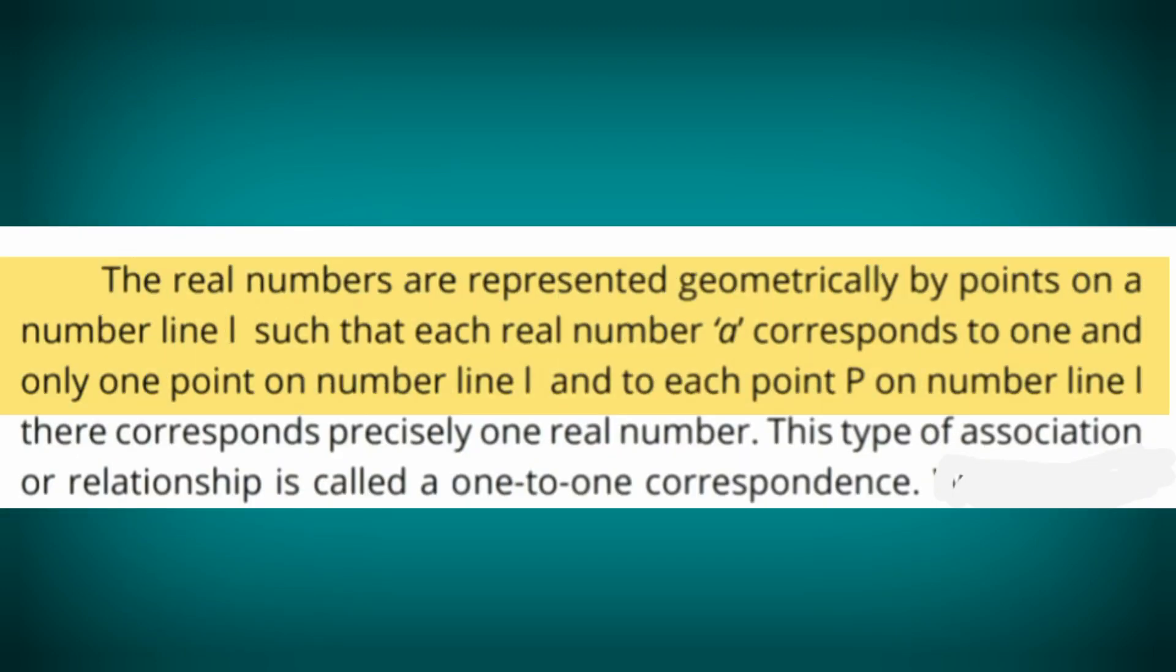The real numbers are represented geometrically by points on a number line L such that each real number A corresponds to one and only one point on the number line L, and to each point P on the number line L there corresponds precisely one real number. This type of association or relationship is called a one-to-one correspondence.